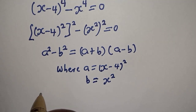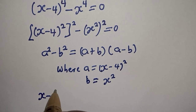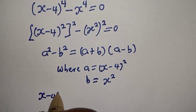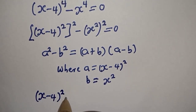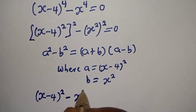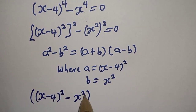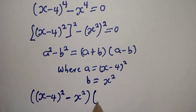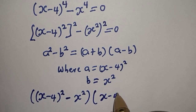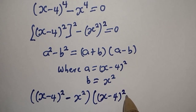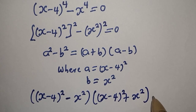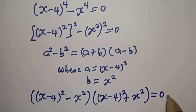You have (S minus 4) squared minus S squared, multiplied by (S minus 4) squared plus S squared, and everything is equal to 0.